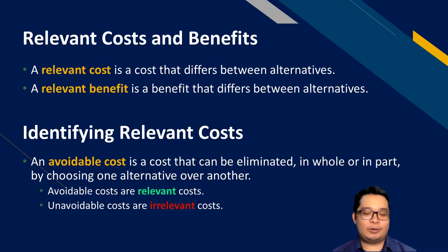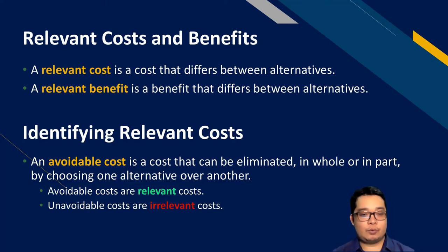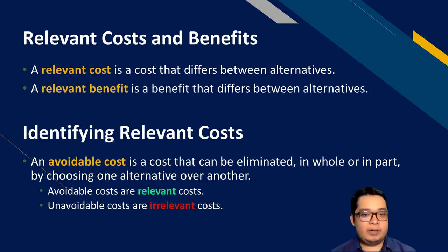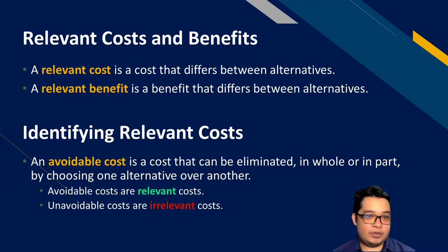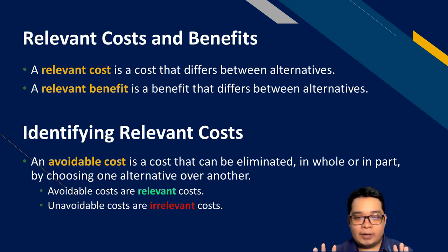The usual clue that a cost is relevant is that it is avoidable. An avoidable cost is one that can be eliminated in whole or in part by choosing one alternative over another. For example, if choosing A over B saves you $20,000 of electricity, then electricity is a relevant cost because you're able to avoid it. Avoidable costs are relevant costs. Costs that are unavoidable — incurred regardless of which alternative you choose — are irrelevant costs.